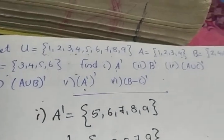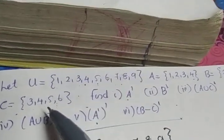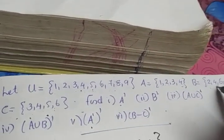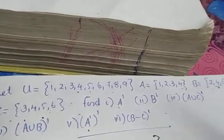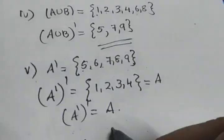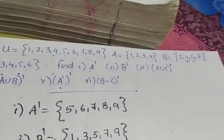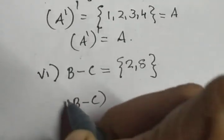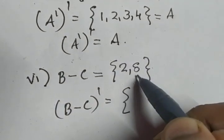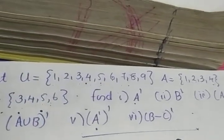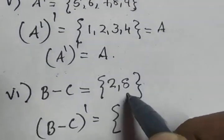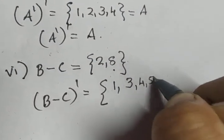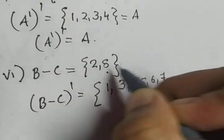The sixth question is (B minus C) dash. First calculate B minus C: remove elements of C from B. 3 is not in B, 4 must be removed, 5 is not in B, 6 must be removed. The balance element in B is {2,8}. Now for (B minus C) dash, strike off 2 and 8 from U. The balance elements from U are {1,3,4,5,6,7,9}.